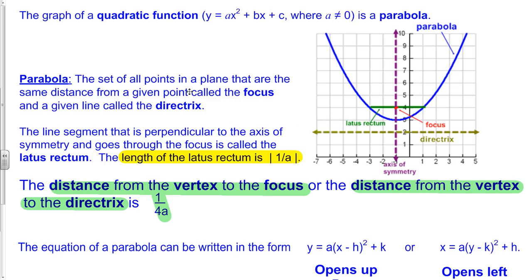So rehashing the definitions here, a parabola is the set of all points in a plane that are the same distance from a given point called the focus and a given line called the directrix. That means that if you have a point on this parabola, it is some distance linearly traveling from the focus to the parabola and the same distance if you go straight down to this line called the directrix. And this will work for all points on the parabola.